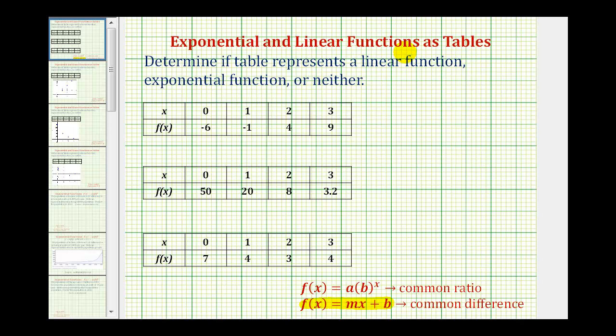An exponential function fits the form f(x) = a(b)^x. So as x increases by a constant amount, the function values would have a common ratio. Let's look at our tables and see if we can recognize the pattern. Notice in all the tables x is increasing by a constant amount, in this case one.